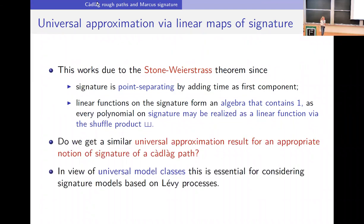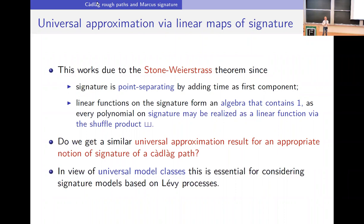The question was motivated by models with jumps that we wanted to use in finance: can we get a universal approximation result for an appropriate notion of signature of a Cadlàg path? Since we could not really find this in the literature, we decided to prove it, also making precise what topology to use — what exactly is meant by a continuous functional of a Cadlàg path. This is what I present in the first part, and then I will come to the Lévy-type signature models.